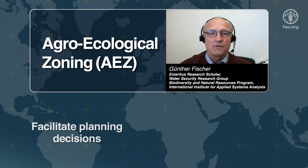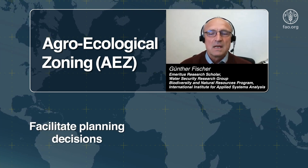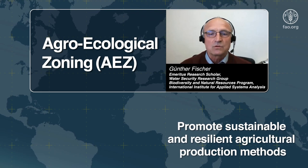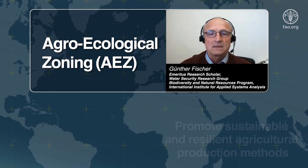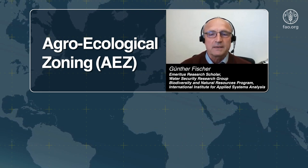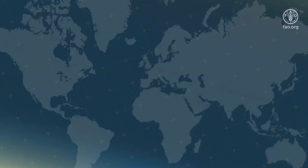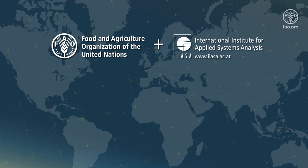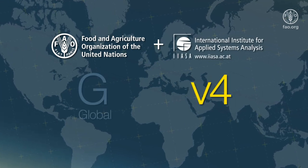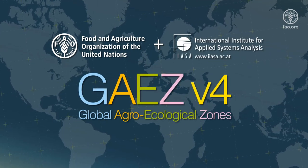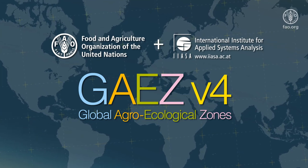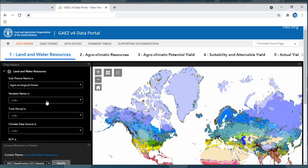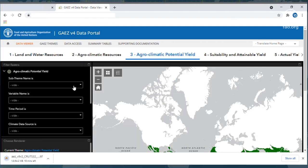Such information can facilitate planning decisions and induce choices that, while being more productive, are also sustainable and resilient to climate change and variability. In 2021, FAO and IIASA are launching version 4 of the Global Agroecological Zoning Platform, which represents the backbone of various applications, including quantifying potential land productivity at the global level.